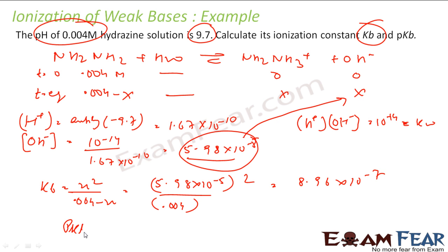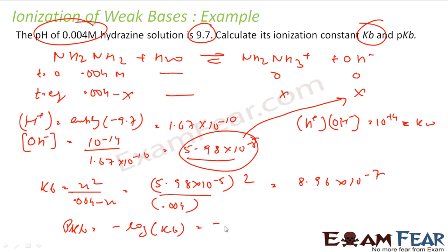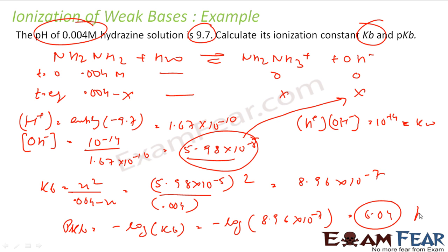Finding pKB is very easy — it is nothing but −log(KB) = −log(8.96 × 10⁻⁷), which gives 6.03. That is the pKB of the solution.